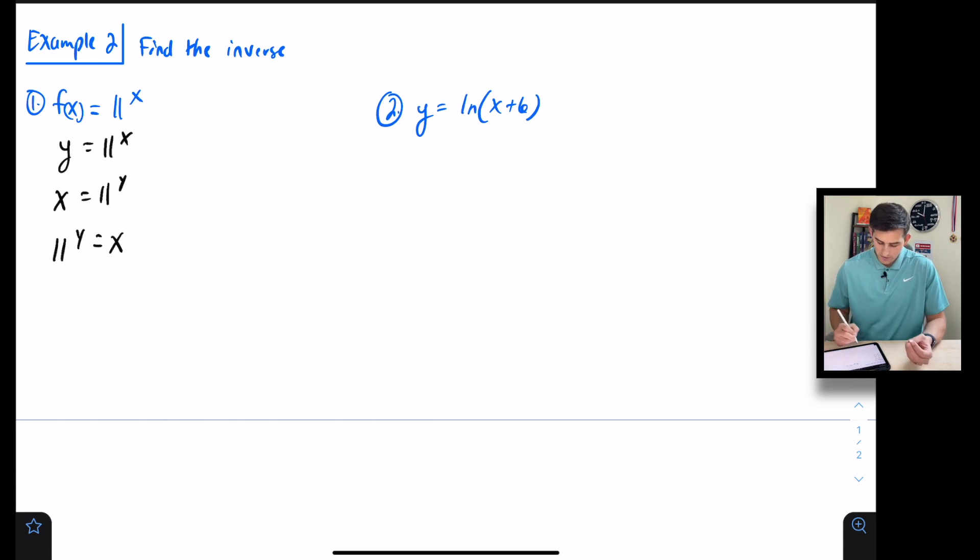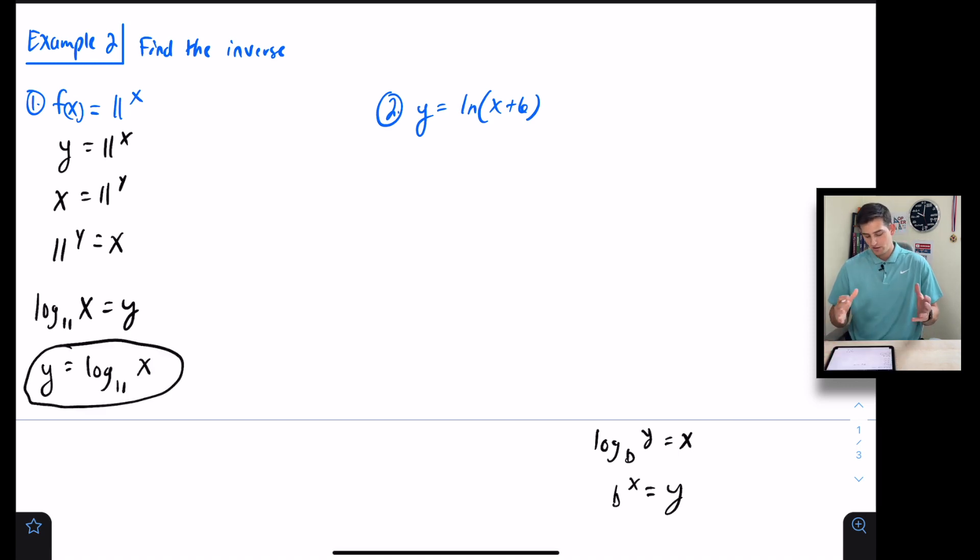If I have log base b of y = x, that's the same as b^x = y. So here with 11^y = x, we could rewrite this as log base 11 of x = y. Now let's reverse this again and write it as y = log base 11 of x, and we have found our inverse. These would be our inverse functions.